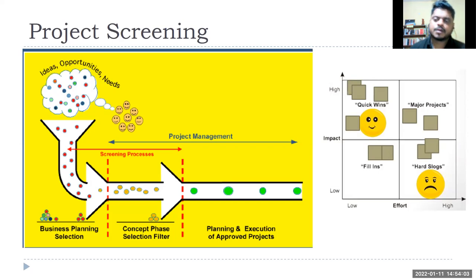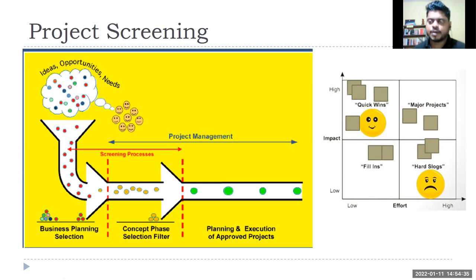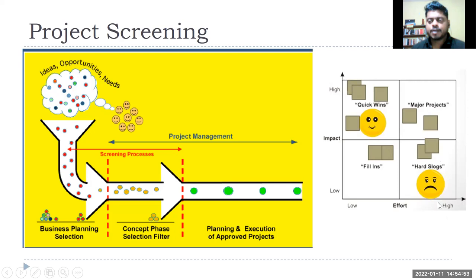Initially the idea is to find low-hanging fruits — where return is very high and effort in terms of money, time, and resources is less. Those are the quick wins to focus on. However, some projects have low impact but high effort required, and companies generally avoid those. But sometimes there is a legal or regulatory requirement — for example, companies are facing requirements to build secure servers due to government mandates on cybersecurity.